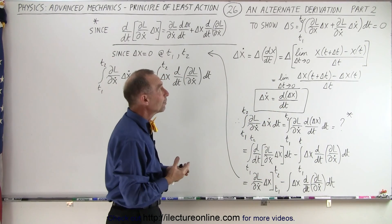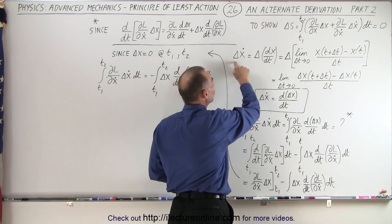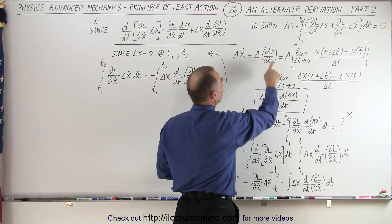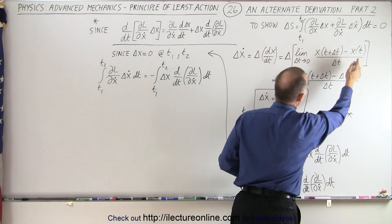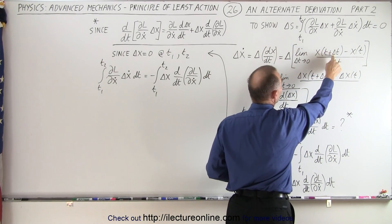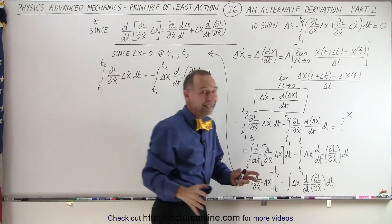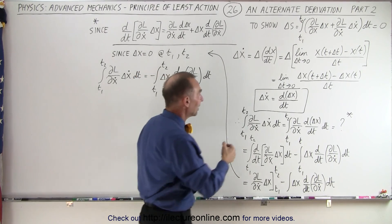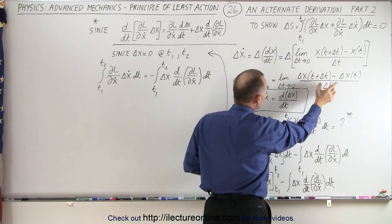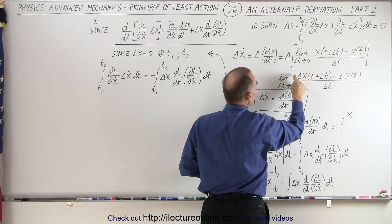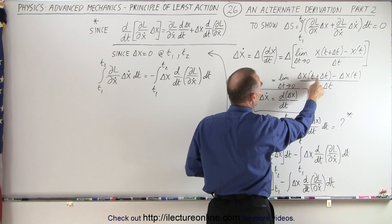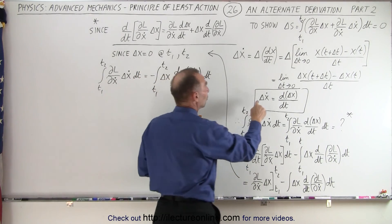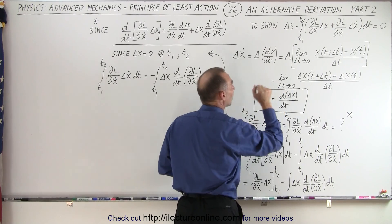So how are we going to do that? We're going to define the change in x-dot. Remember, x-dot is dx/dt, so we can write the change in dx/dt. By definition, dx/dt can be written as the limit of x(t + Δt) minus x(t) divided by Δt as Δt goes to zero — simply the definition of the derivative using limits. If we take the change in that, it can be brought into the limit calculation, giving us: the change in x-dot equals d/dt of δx.